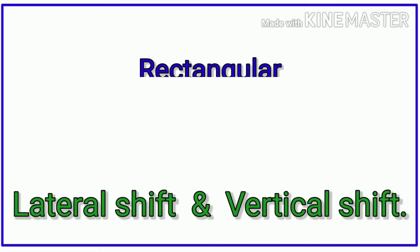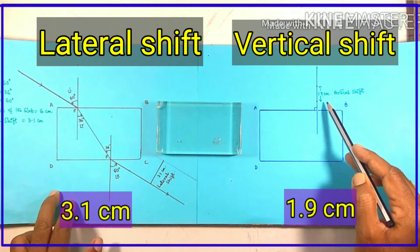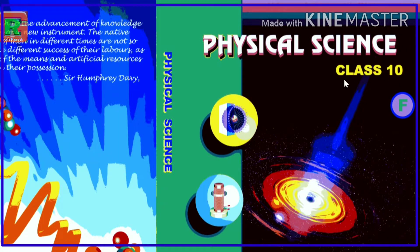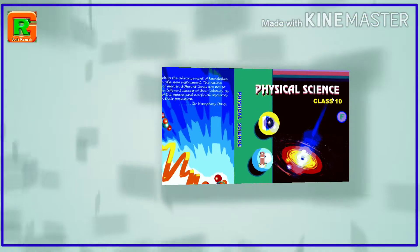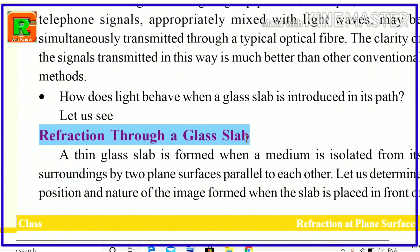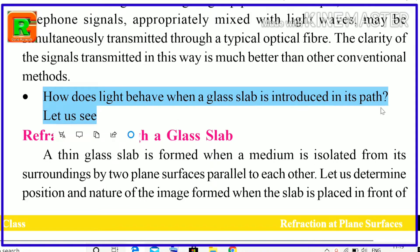Lateral shift and vertical shift of a rectangular glass slab. In this video, we are going to learn how to find lateral shift and vertical shift of a glass slab practically. This slab activity is given in 10th class physical science, from the chapter refraction of light at plane surfaces. Refraction through a glass slab: how does light behave when a glass slab is introduced in its path?